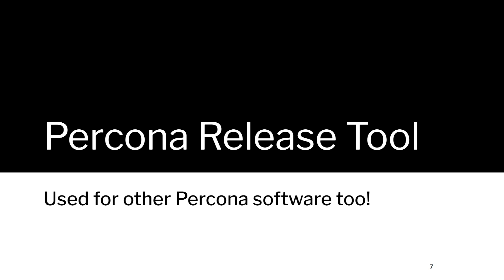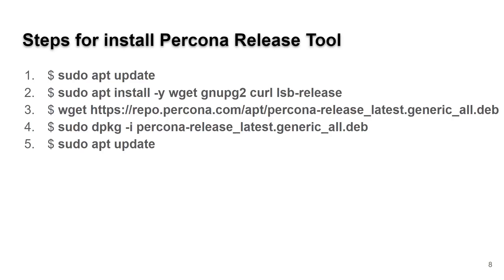First, we're going to use the Ubuntu Package Manager with the Percona Release Tool. This release tool can also be used to install other software like Percona's PMM, Percona's distribution of MySQL, MongoDB, or other tools. The steps for the release tool are very simple. After you build your fresh install of Ubuntu 20.04 LTS, run sudo apt update to make sure the package manager is pointing in the right directions.